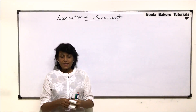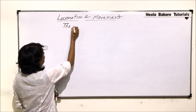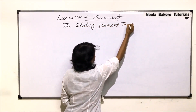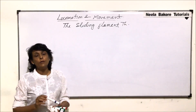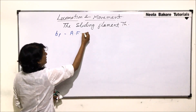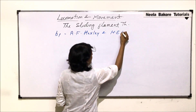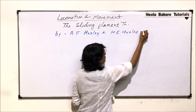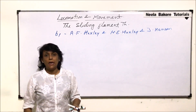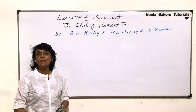We will now discuss the sliding filament theory to understand how muscles contract. This theory was proposed by two teams of scientists — one led by A.F. Huxley and the other by H.E. Huxley and J. Henson. Once we understand how this works, we will be able to correlate the name given to this theory.